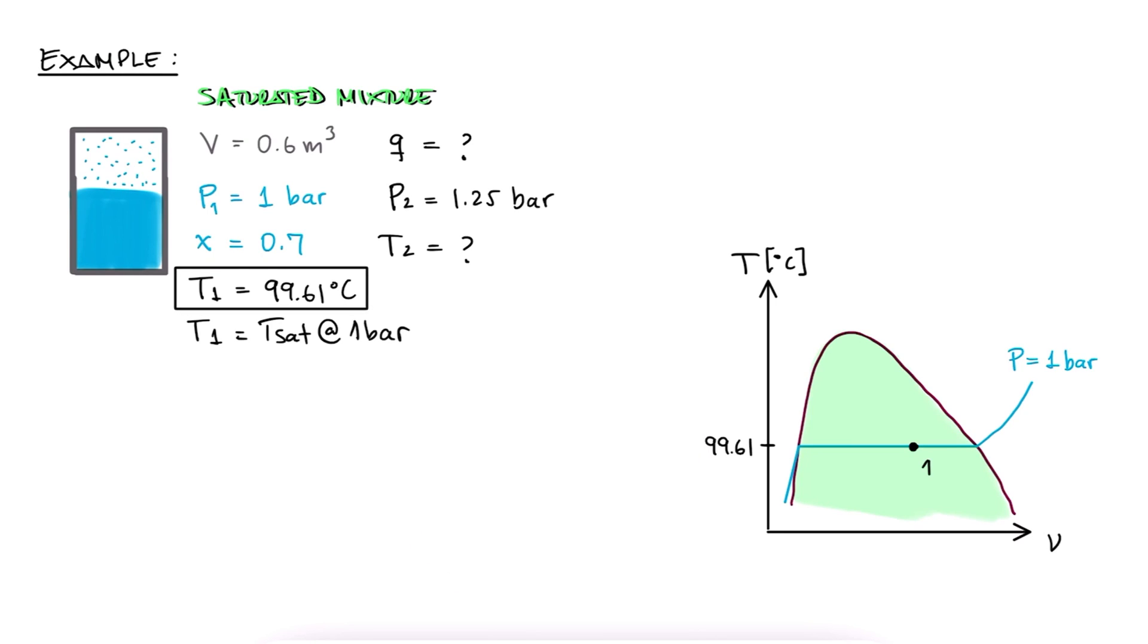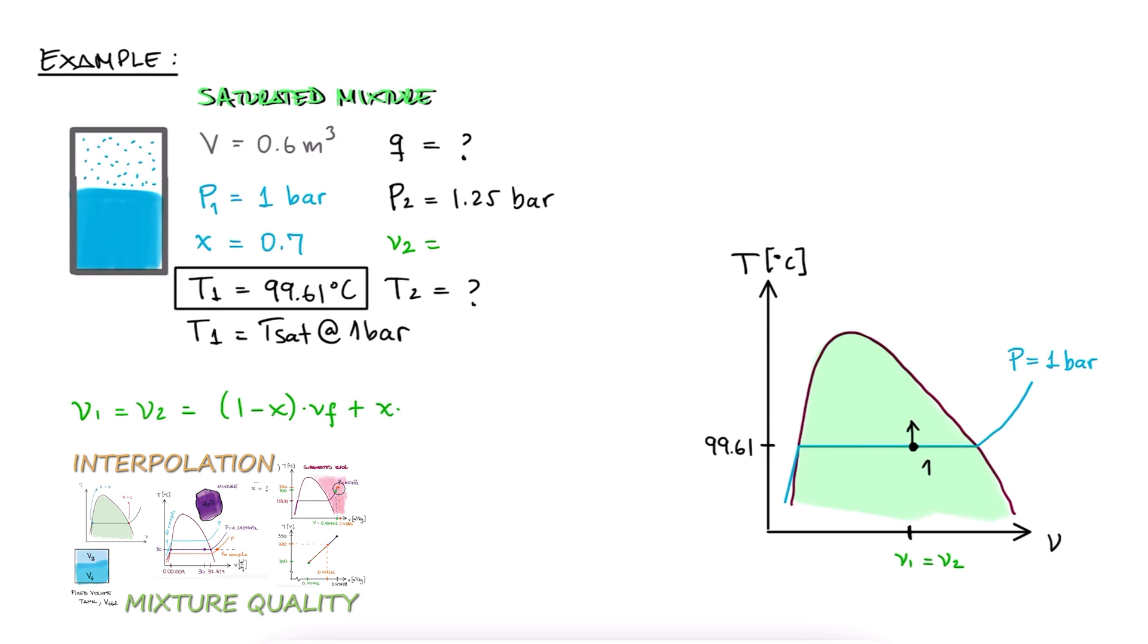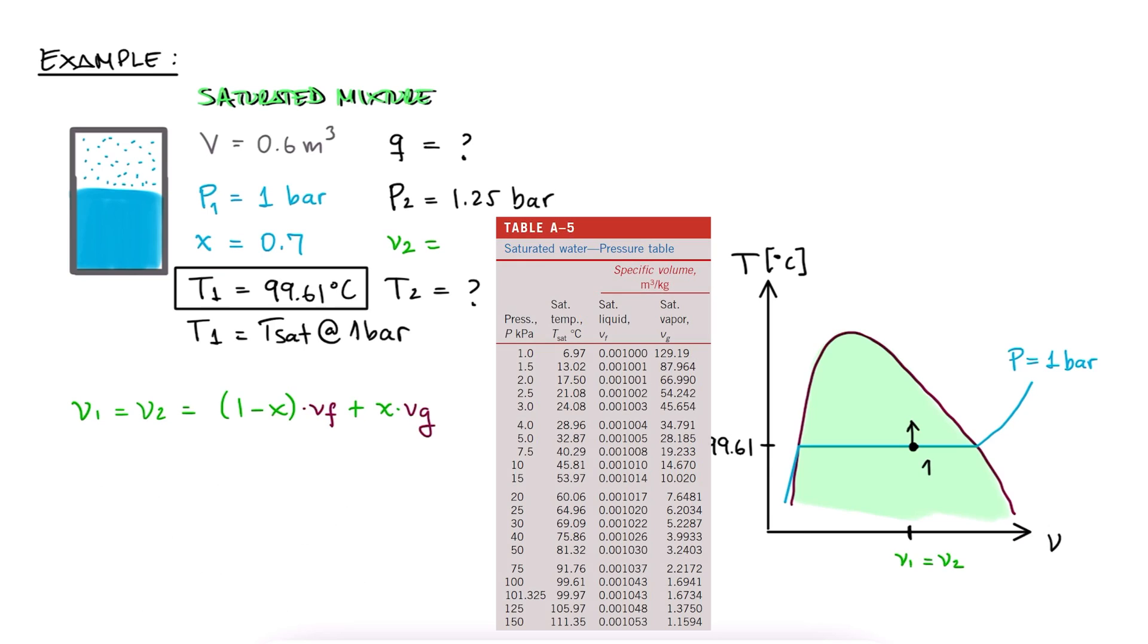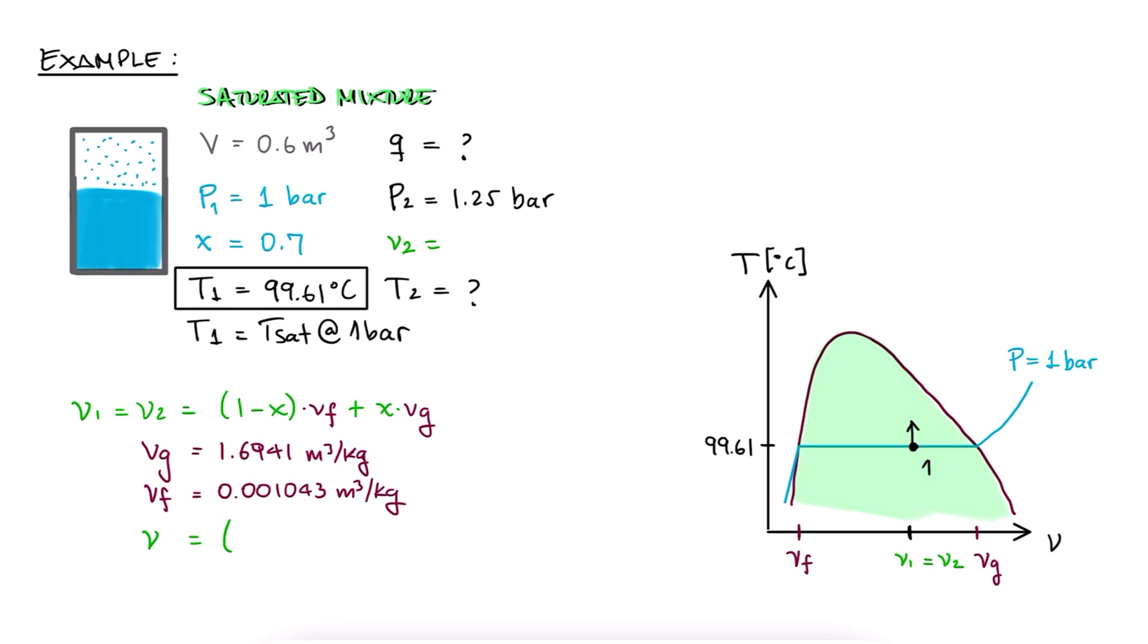By adding heat, what we'll do to this mixture in a rigid tank that cannot change its volume is going straight up like we previously explained. So if we know V1, we know V2, and this is useful because with V2 and P2, we can find T2, the second question. With the quality expression we derived in the previous lecture, and by looking up the values for vf and vg for 1 bar, we can find that the specific volume is 1.186, and this is the specific volume for before adding heat and after adding heat.